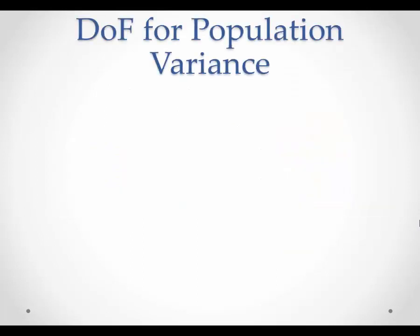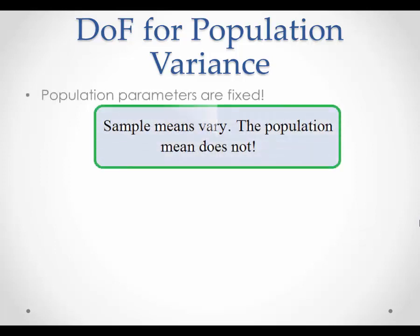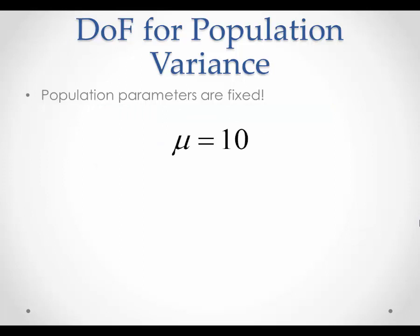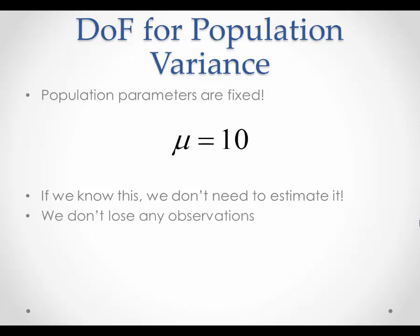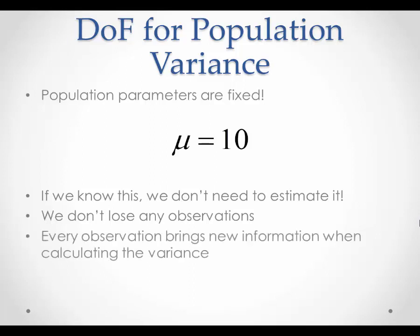How does this differ for the population variance? Population parameters are fixed. Sample means can vary as they change from sample to sample; however, the population mean does not. Suppose a population mean is 10 — this is a fixed value and does not change from sample to sample. If we know the population mean, then we don't need to estimate it. This means we don't lose any observations in the estimation process, unlike when using the sample mean. As such, every observation brings new information when calculating the variance — none are made redundant.